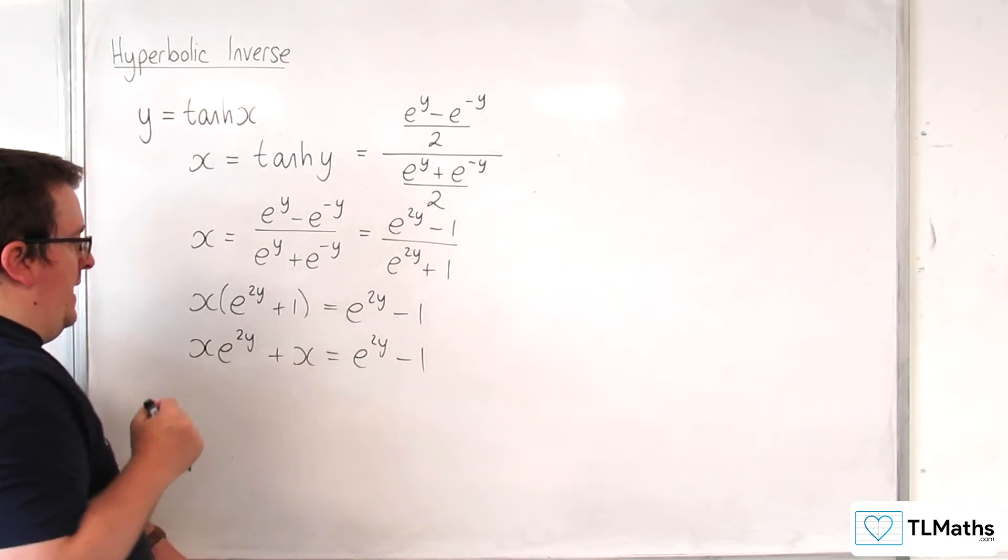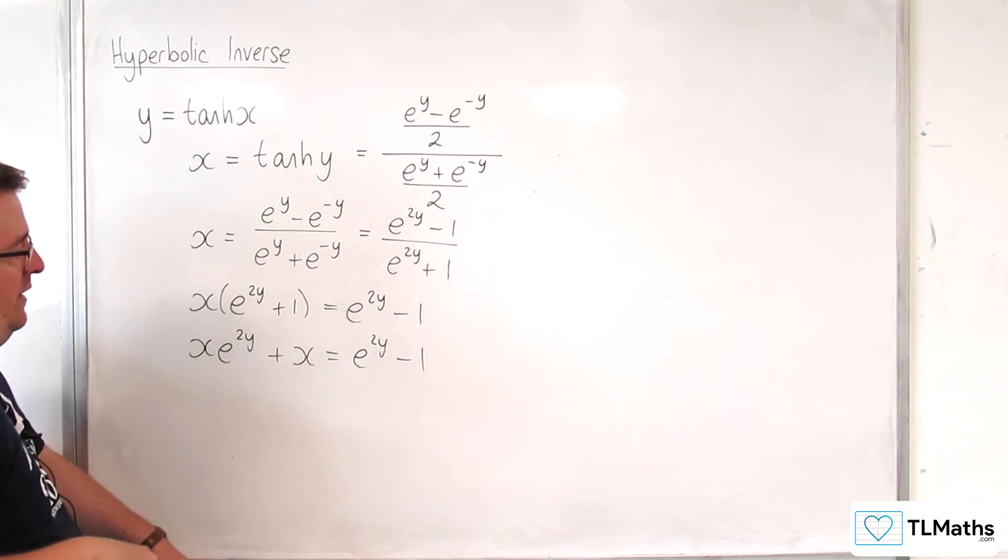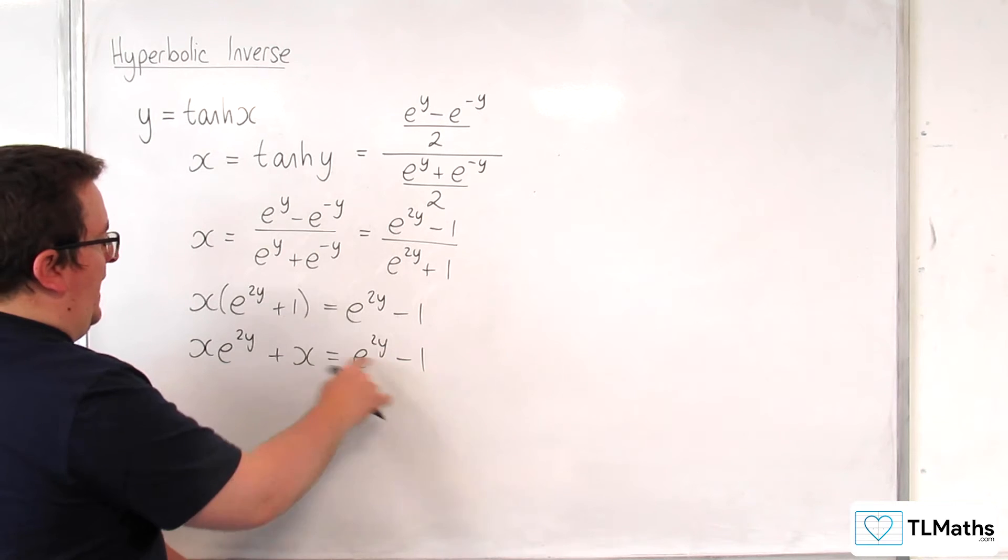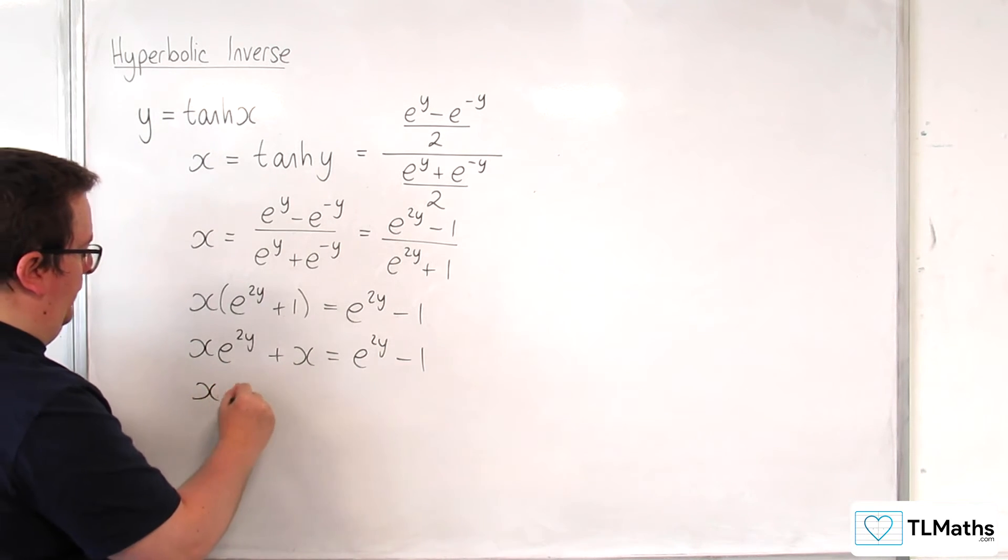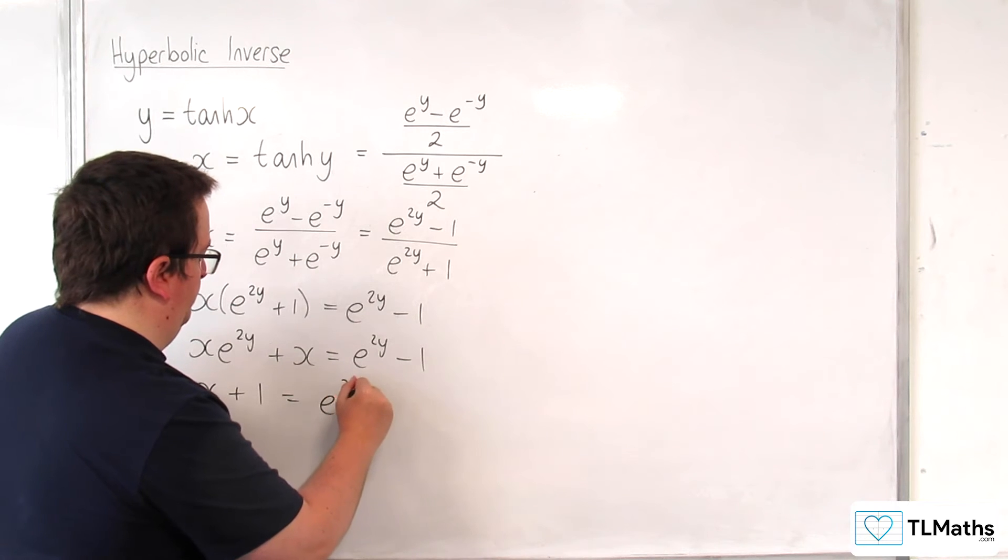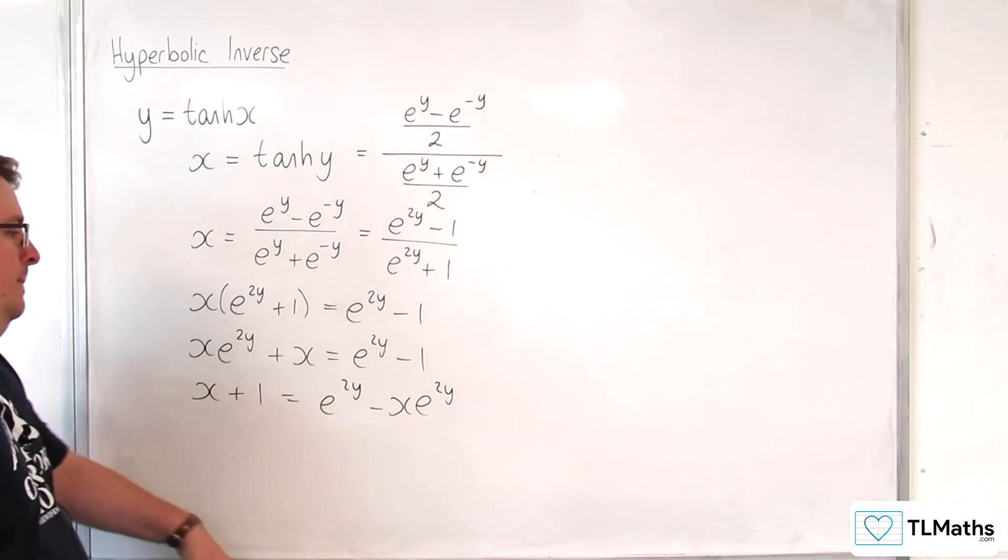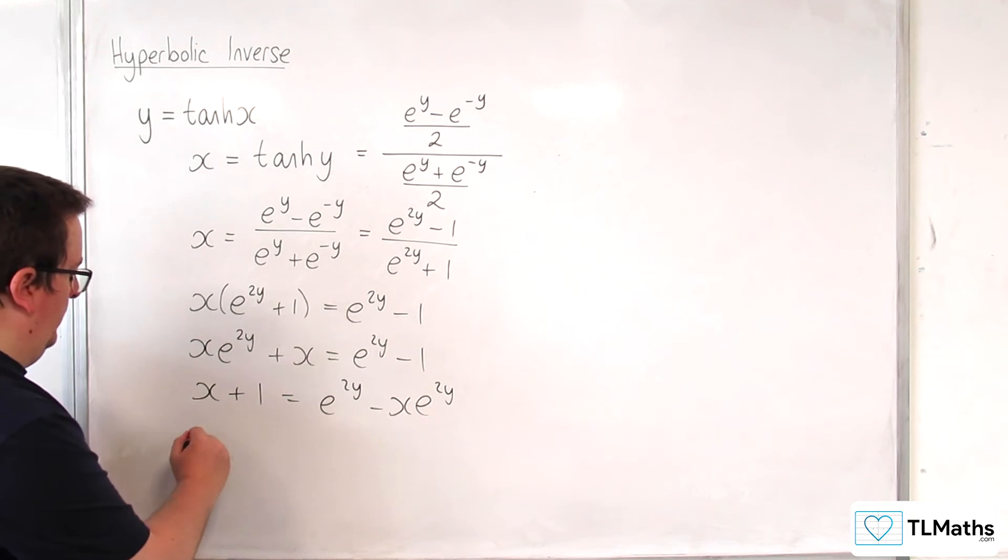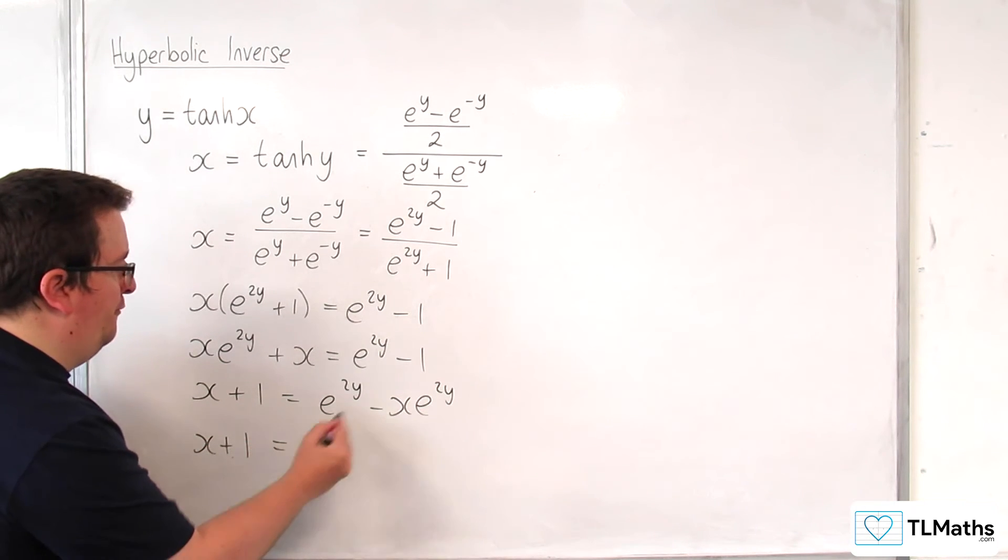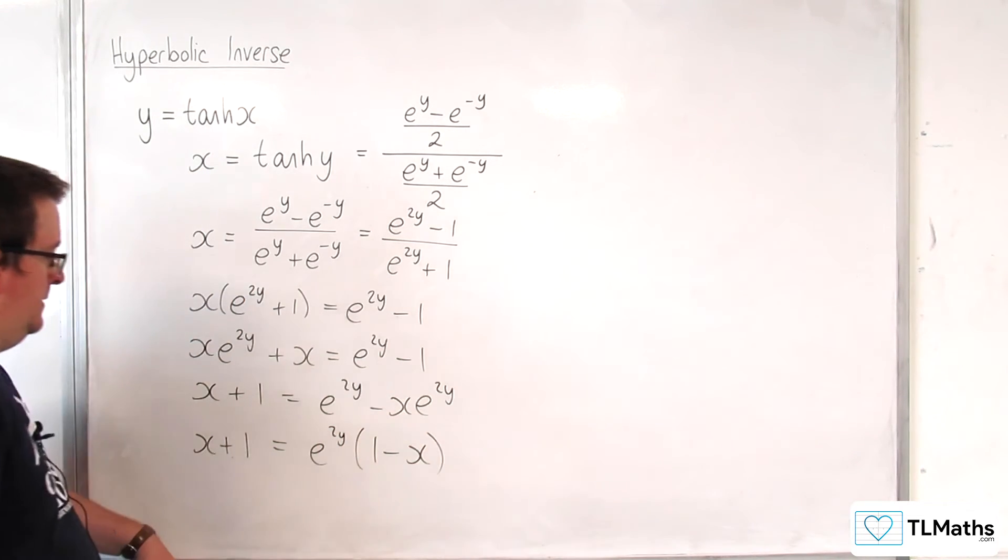What I'm going to do next is try and keep things kind of positive. So I'm going to add 1 to both sides and subtract the x e to the 2y from both sides. Okay, so then I'm going to factorise the right hand side: e to the 2y times 1 take away x.